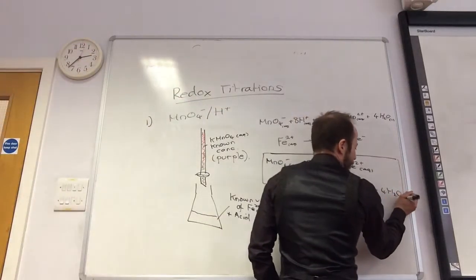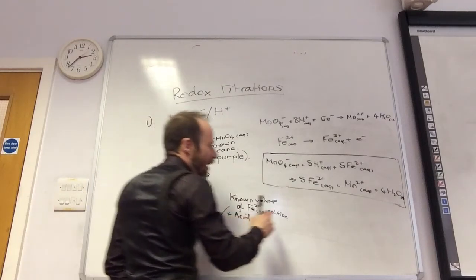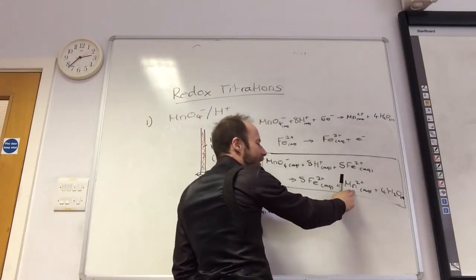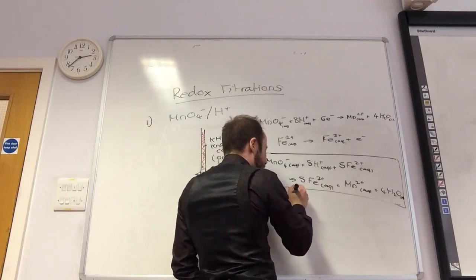So your end point is when you see a sort of pale pink colour persist. Now this is very, you'll see it, Mn2 plus is very, very pale pink.